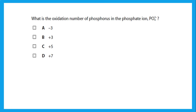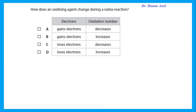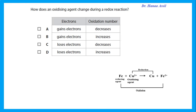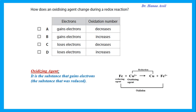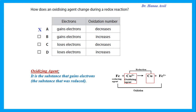Oxidation is an increase in oxidation number; reduction is a decrease. The oxidising agent is the species that is reduced (its oxidation number decreases). The reducing agent is the species that is oxidised (its oxidation number increases). For example, if copper changes from Cu²⁺ to Cu, the oxidation number decreases from +2 to 0 — this is reduction, so Cu²⁺ is the oxidising agent.